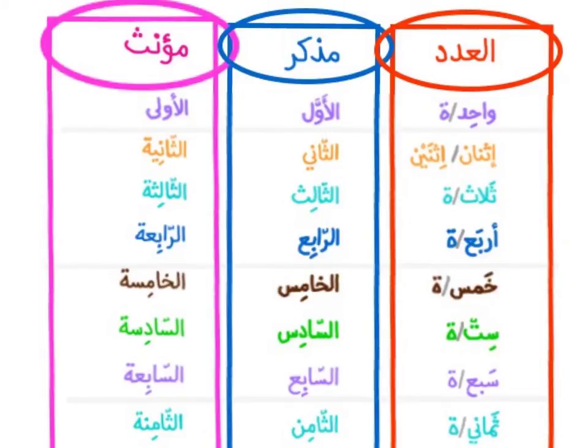So واحد is number one, but الأول is 'the first,' and الأولى is 'the first' when talking about a feminine noun. اثنان, two: الثاني is 'the second' in masculine, الثانية in feminine.